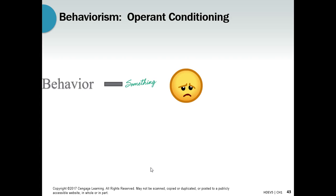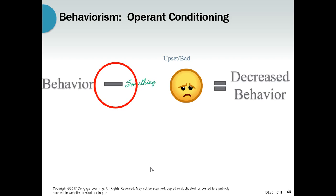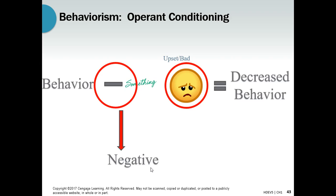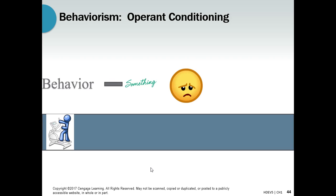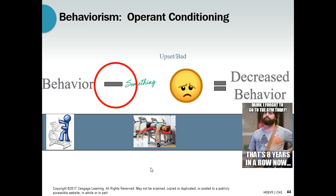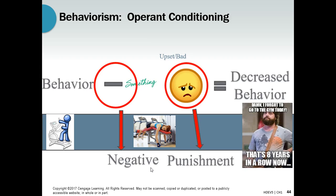I can also subtract something that makes you sad or angry, and this should decrease behavior. Because we're subtracting, we're still going to call it negative. But now, whatever we subtracted made you feel bad, so that is a punishment. Going back to our behavior — going to the gym — we're going to subtract your sleeping. You have to wake up early to go to the gym, and that should decrease behavior. Because we're taking away your sleep, we call that negative. And because taking away your sleep makes you upset, that's a punishment. Losing sleep is a negative punishment, and it's going to decrease the behavior — you're going to go to the gym less.